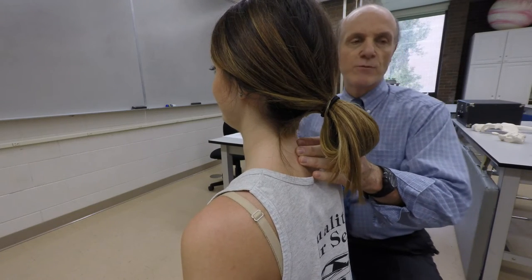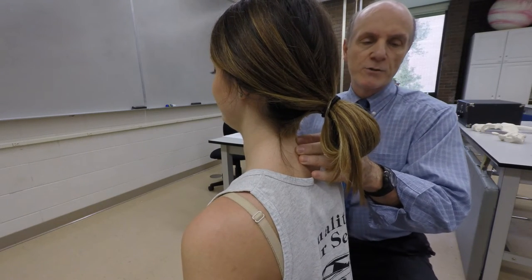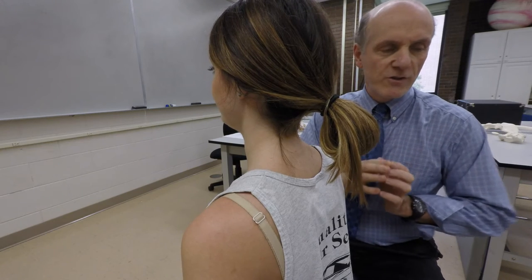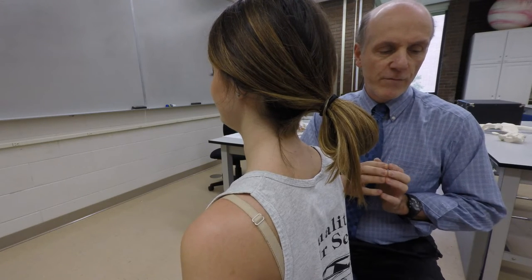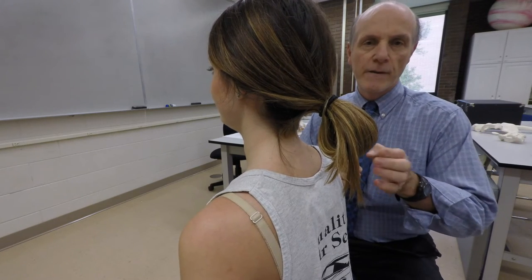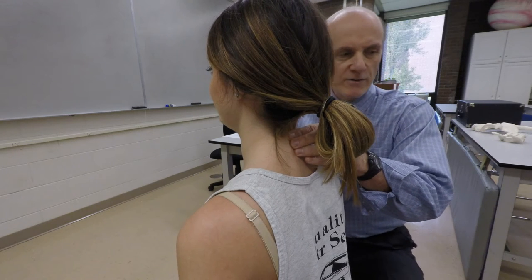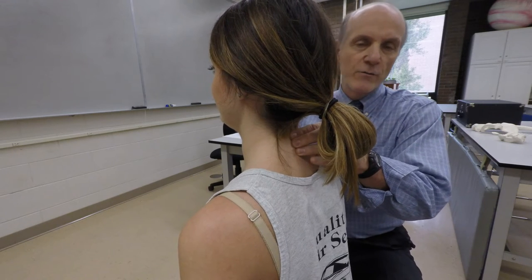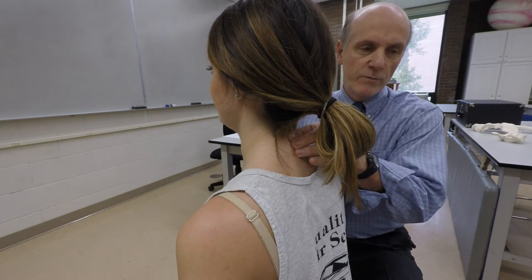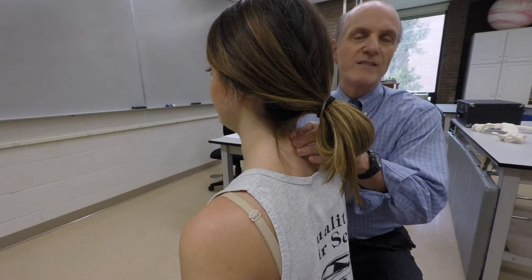We're going to palpate the spinous process of C7. Place your second, third, and fourth digits in line, and then place the soft pads of those fingers onto the spinous process of what you believe would be C6, C7, and T1.